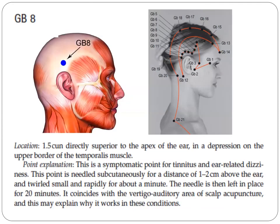Next point is GB8. It is 1.5 cun directly superior to the apex of the ear, in a depression on the upper border of the temporalis muscle. This is a symptomatic point for tinnitus and ear-related dizziness. This point is needled subcutaneously for a distance of one to two centimeters above the ear, drilled small and rapidly for about a minute. The needle is then left in place for 20 minutes. It coincides with the vertigo auditory area of scalp acupuncture, which may explain why it works in these conditions.